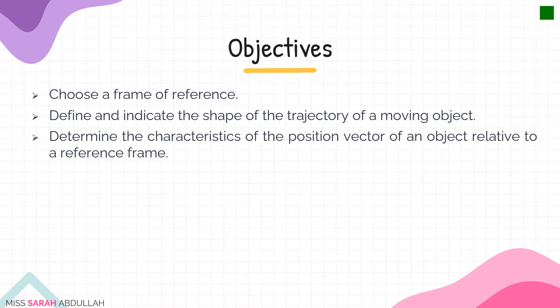These are the objectives that we are going to cover in this week's lecture. You will be able to choose the frame of reference, define and indicate the shape of the trajectory of a moving object, and determine the characteristics of the position vector of an object relative to a reference frame.